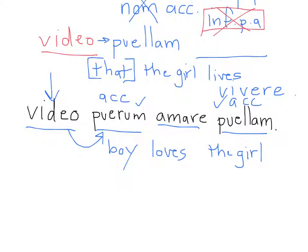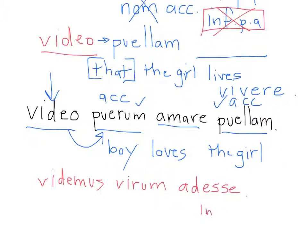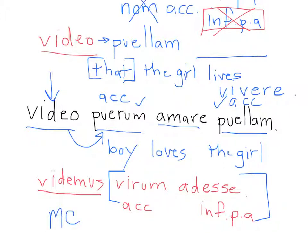Another example: 'We see that the man is present.' The infinitive present active is translated as if it were an indicative. The accusative noun is the subject, and the verb video in the main clause sets into motion this strange syntax in the subordinate clause, where accusatives become subjects and infinitives are translated as English indicatives. 'I see that the man is present' — not 'I see the man to be present'; that just doesn't sound like English.